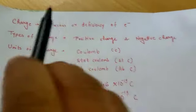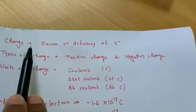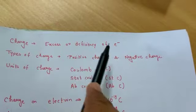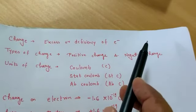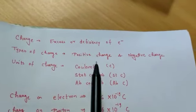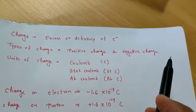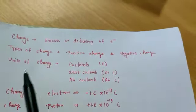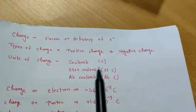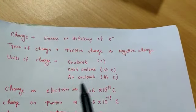Now we have seen charge. Charge definition: excess or deficiency of electrons is called charge. Types of charge: positive charge and negative charge. Units of charge: coulomb, stat coulomb.